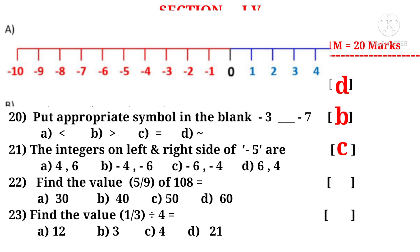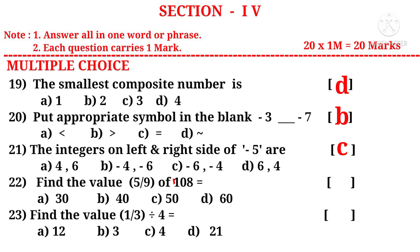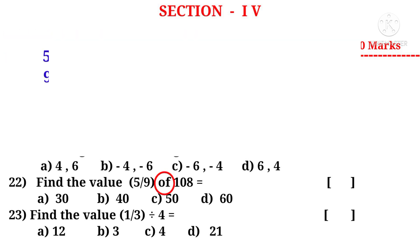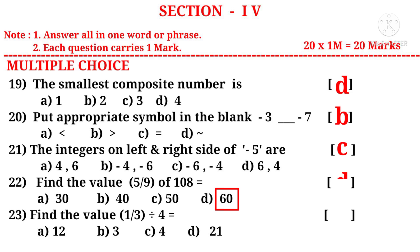Find the value of 5 by 9 of 108. Observe that the word 'of' indicates multiplication. So 5 by 9 into 108. On simplification by 9, 9 ones are, 9 twelves are. In the numerator, 5 into 12 is 60 by 1, that is equal to 60. So the correct choice is D.